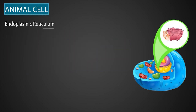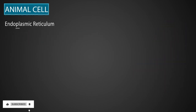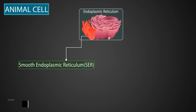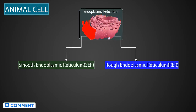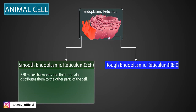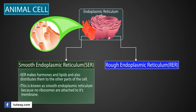Now let's learn about the endoplasmic reticulum. Endoplasmic reticulum, or ER, is a network of sacs called cisterna, that branches off from the outer nuclear membrane. An endoplasmic reticulum is of two types: smooth endoplasmic reticulum and rough endoplasmic reticulum. Smooth endoplasmic reticulum, also known as SER, makes hormones and lipids, and also distributes them to other parts of the cell. It is called smooth because no ribosomes are attached to its membrane.